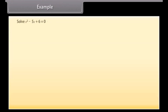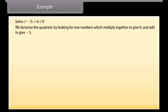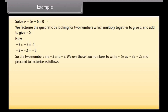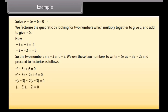Example: Solve x² − 5x + 6 = 0. We look for two numbers which multiply to give 6 and add to give −5. Now −3 × −2 = 6 and −3 + (−2) = −5, so the two numbers are −3 and −2. We write −5x as −3x − 2x and factorize, giving (x − 3)(x − 2) = 0. Therefore x = 3 or x = 2 are the two solutions.